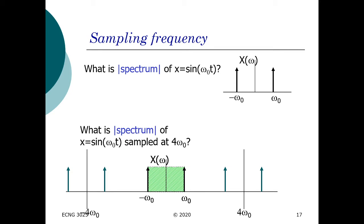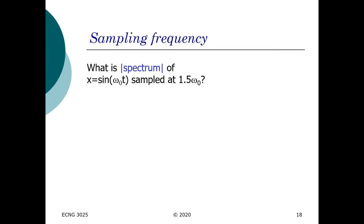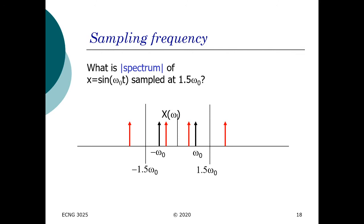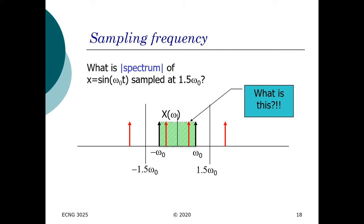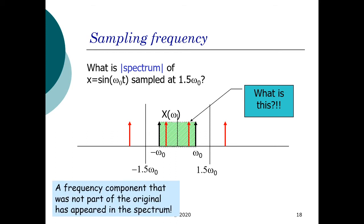What happens if we decrease the sampling frequency or use a non-integer multiple — say 1.5ω₀? When we try to replicate the spectrum using 1.5ω₀, the original spectrum is 2ω₀ spanning from −ω₀ to +ω₀. But now we have these two red lines representing our sampling frequency at 1.5ω₀ — these components did not exist before and now they appear inside the spectrum of our signal. When we start sampling at these irregular frequencies, we introduce frequency components that were not part of the original spectrum. These frequency components are what we refer to as aliases.